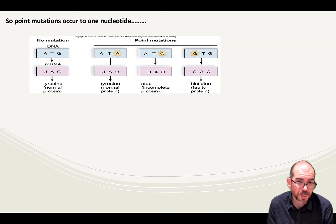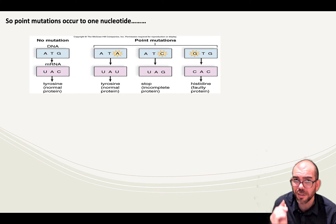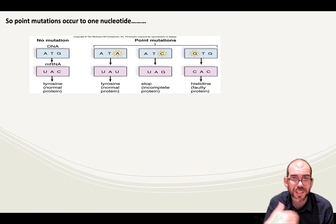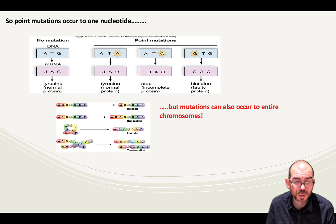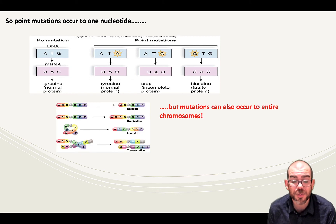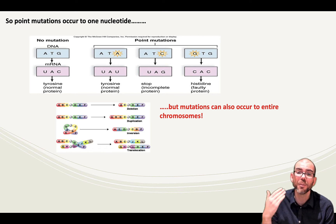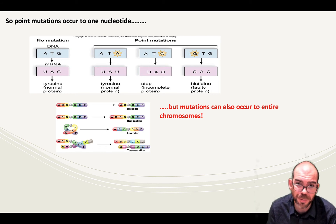So a point mutation occurs only to one nucleotide — it can be a substitution, an addition, or a deletion. But mutations don't end there. Entire regions of chromosomes can become mutated as well, and these have even more potentially detrimental effects.